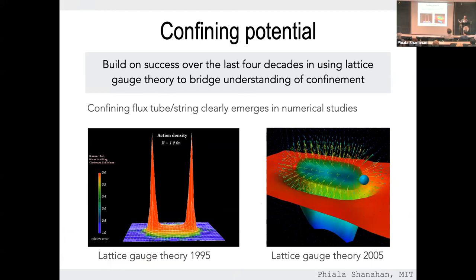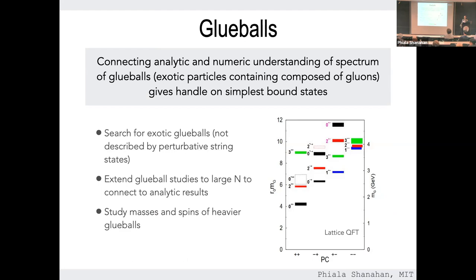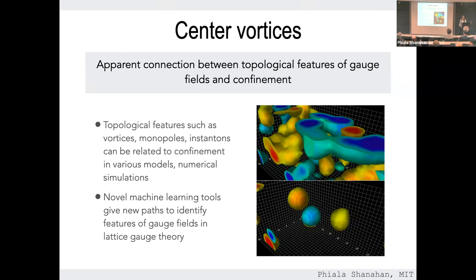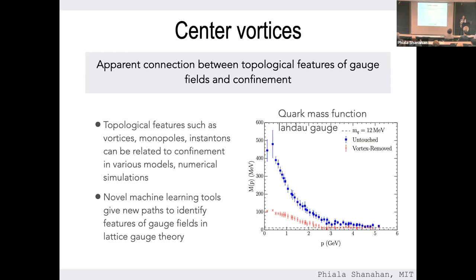Let me recall what lattice QCD can tell us about confinement. We've talked about confining strings emerging clearly in numerical studies — this is the evolution of lattice gauge theory to 2005. We've talked about glueballs, and we'll talk more about how lattice calculations can give us spectra with systematic control. What we haven't yet talked about — and which deserves more thought — is the apparent connection between topological features of gauge fields and confinement.